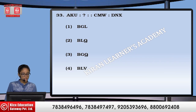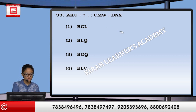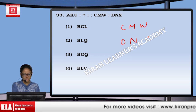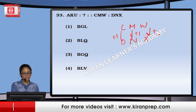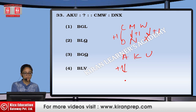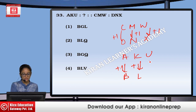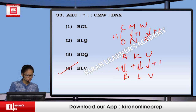Next, we have letters C, M, W, D, N, X following a pattern of plus 1, then plus 2 alternating. Similarly, with A, K, U: adding plus 1 gives B, then K plus 1 gives L, then U plus 1 gives V. So the option will be the fourth one.